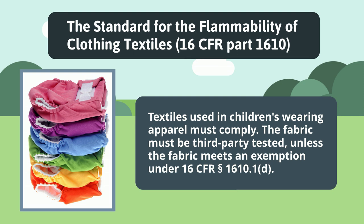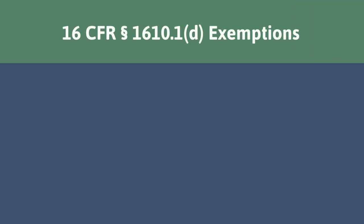Textiles used in children's wearing apparel must comply with the standard for the flammability of clothing textiles. The fabric must be third-party tested unless the fabric meets an exemption under 16 CFR section 1610.1. Fabrics that meet a specific exemption from the standard do not require testing.